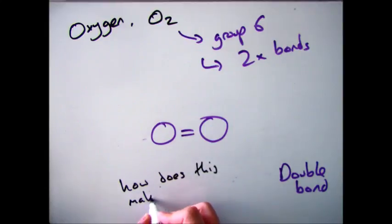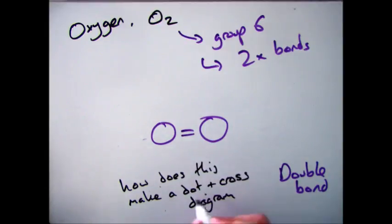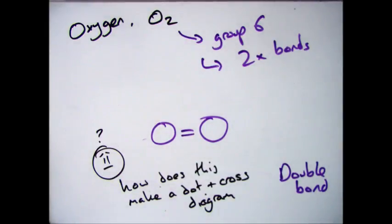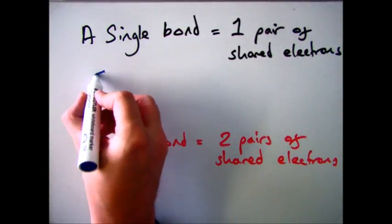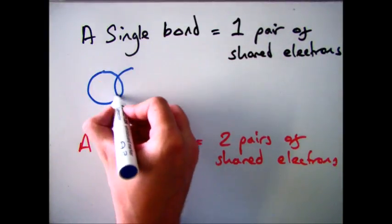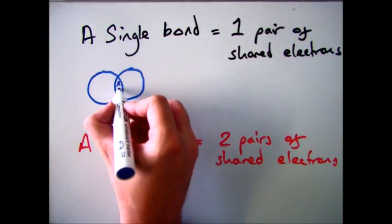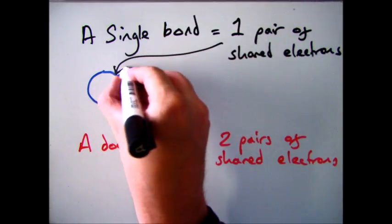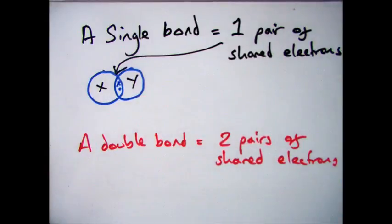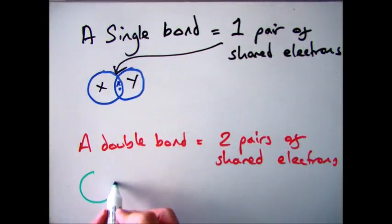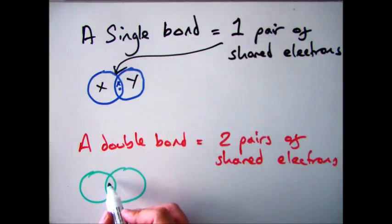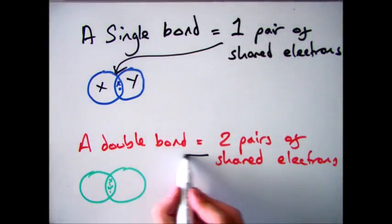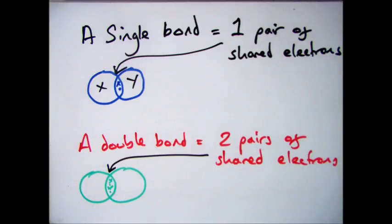So how can we take that and turn it into a dot and cross diagram? We need to go back to our original definition. A single bond is 1 pair of shared electrons. So if we've got 1 single line drawn, we put 1 pair of electrons in — one dot and one cross — which signifies that one is from one atom and one is from the other. If we have a double bond, we put 2 pairs in: 2 crosses and 2 dots.